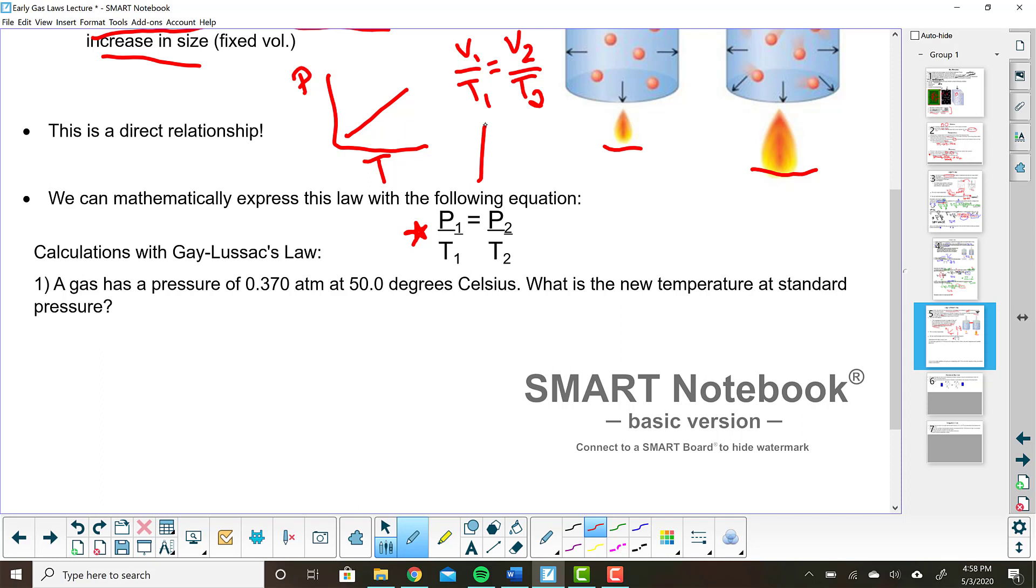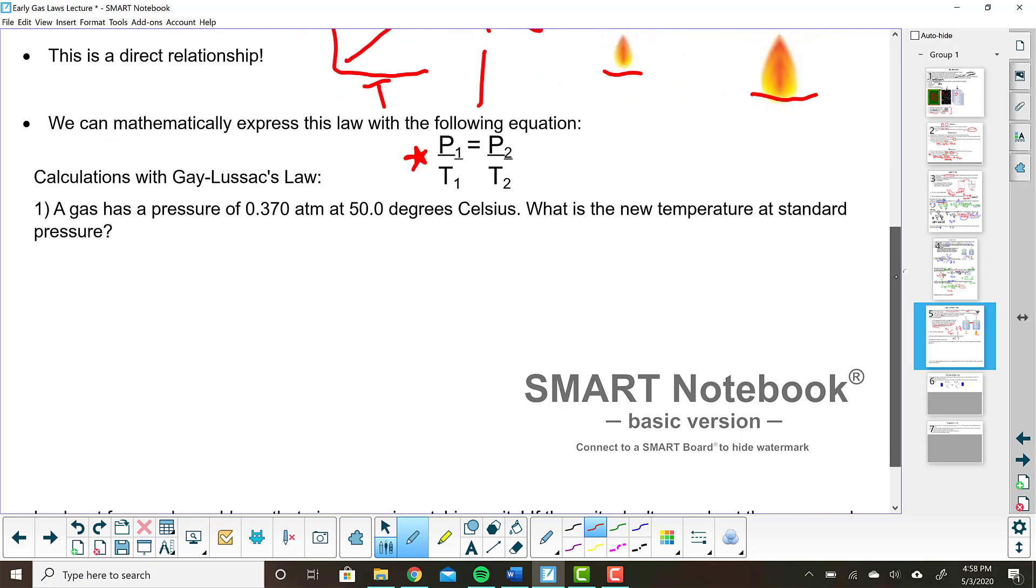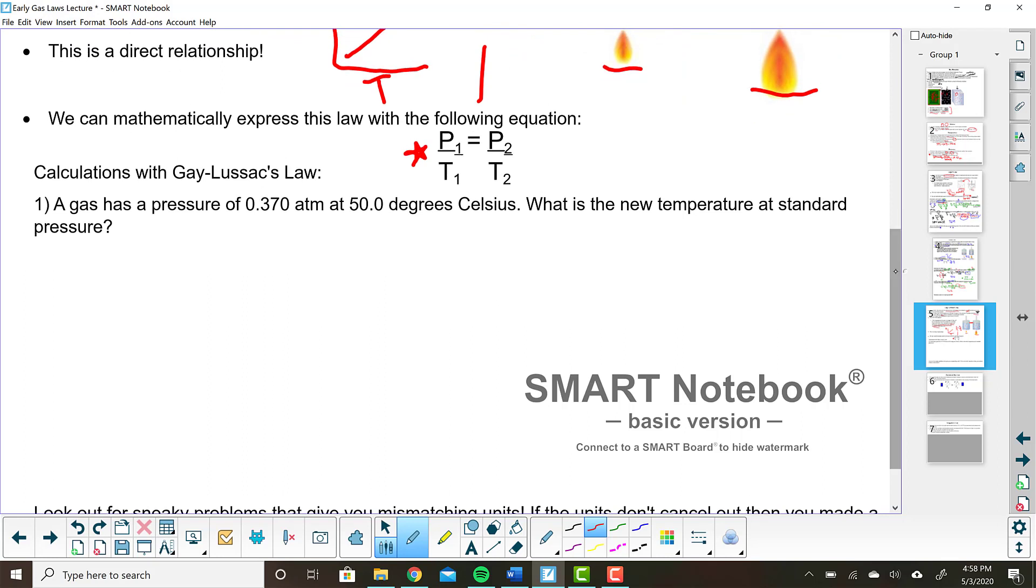So let's see if we can use this equation just like we use the last one. We've got a question here. It says, a gas has a pressure of 0.370 atmospheres at 50 degrees Celsius. What is the new temperature at standard pressure? Okay, a couple of things here. Remember, we must have all of our temperatures in Kelvin. The second that you read that degree Celsius, maybe I went right by it. You were like, no, we've got to convert that to Kelvin. Yes, we have to convert this to Kelvin. So we take this 50 degrees and we add 273. 50 plus 273 is 323 Kelvin.